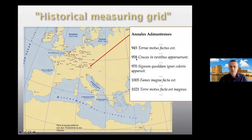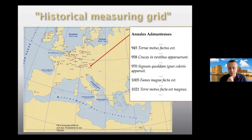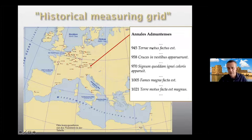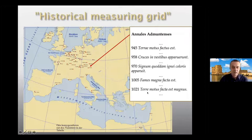Let's take a look in one of these annals. It's the Anales ad Montensis, which were written in what is today the city of Salzburg in Austria. Here you can see the usual structure of these annals. You have the given year, and then you have a very, very short entry like this one: 'An earthquake has happened.' And that's it. More you will not find in this whole annals about this year. You can see there are some natural events like this.